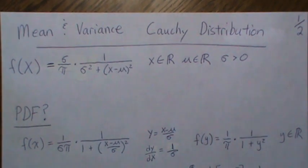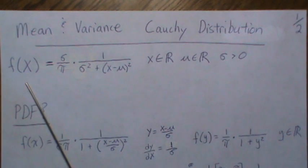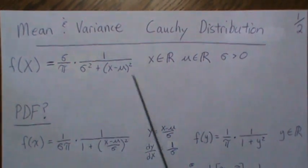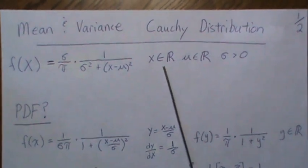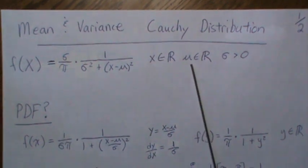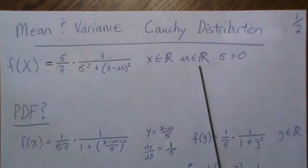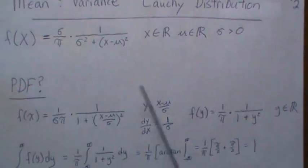In this video we're going to look at the mean and the variance of a Cauchy distribution. The Cauchy density can be written like this, where the domain is all real numbers, mu which is a shift parameter is all real numbers, and we have a scale parameter sigma that's positive.